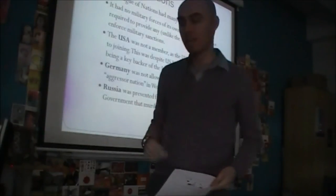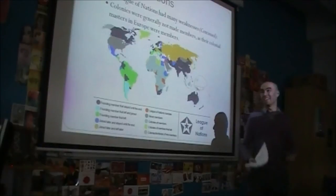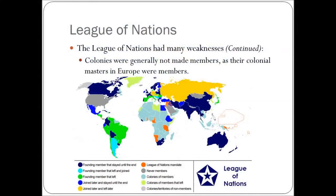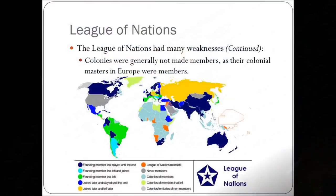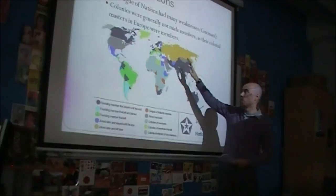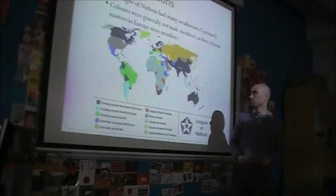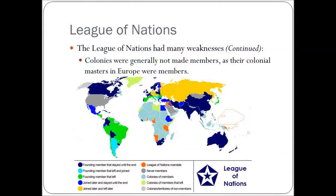There were more issues: the colonies were generally not members either. The European colonial masters were members, but this raises the question of whether you can have true representation when the colonial countries speak for their colonies. Looking at the map, most of Africa and Southeast Asia were never members of the League of Nations. Countries like Mexico, Finland, Turkey, Russia, and Germany were not members at the beginning. Some joined later and then left when it was clear it wasn't going to be effective. At the start, the US, Germany, and Russia were not members.